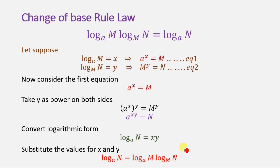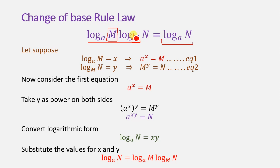The fourth rule is the change of base rule law. According to this rule, if we have logarithmic terms log base a of m and log base m of n, we can write these two terms simply as log base a of n. The capital m in the first logarithm equals the base of the second logarithmic term. For proving this, let's consider log base a of m equals x and log base m of n equals y, giving us a to the power x equals m and m to the power y equals n.